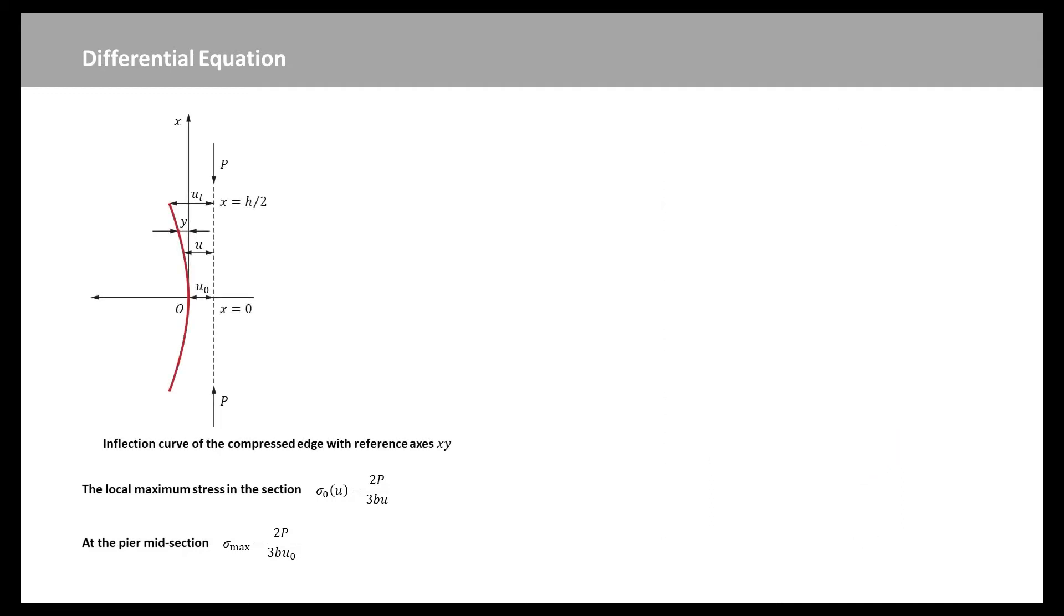Now we see a simple figure. It shows the deformation of the pier's compressed edge. The origin of the reference axis is at the midsection. Axis X is parallel to the direction of P, and the tangent is to the deformed compressed edge at the origin O. Now let Y be the distance between the line of the pier's compressed edge from axis X. Thus, at each section of the pier, we have Y equal to U minus UO. And for X equal to half of H, Y is equal to UL minus UO.